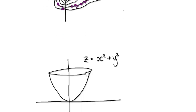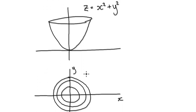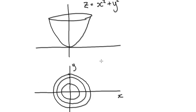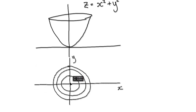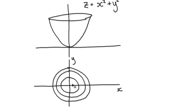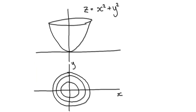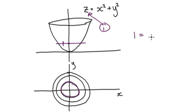Here's another example: you've got a paraboloid. If you look at a height of 1, you cut it across here, and the equation of that level curve — putting z = 1 into the equation — gives you a circle of radius 1.